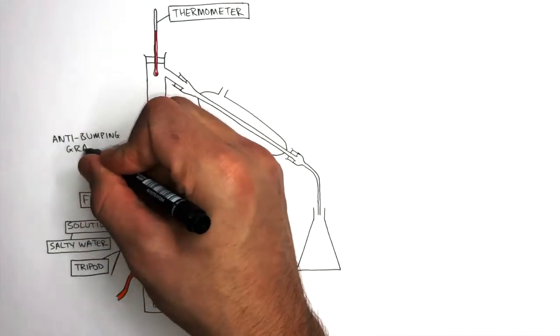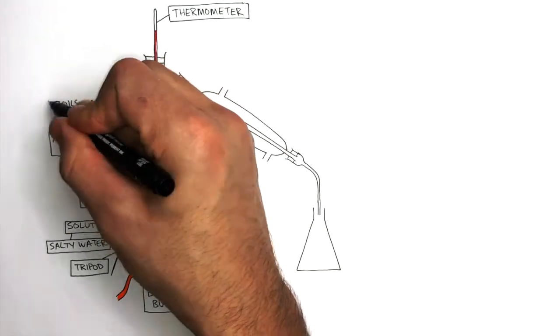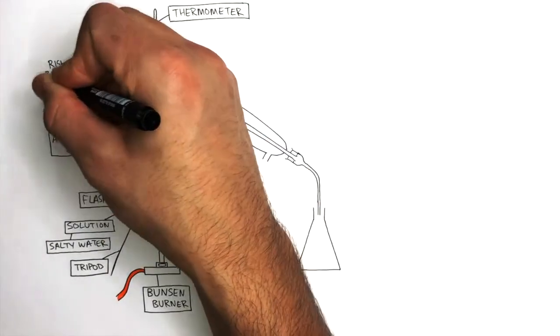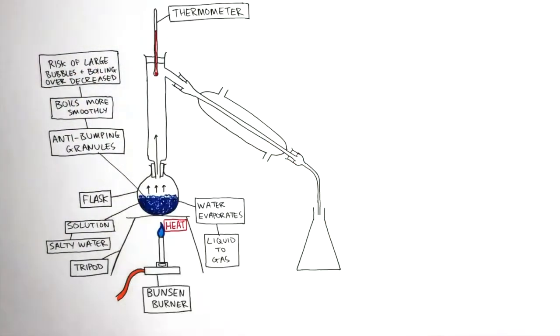Anti-bumping granules are really important. They help the mixture boil more smoothly. Therefore the risk of large bubbles and boiling over is decreased. Here I'm drawing small bubbles to represent the gentle boiling.